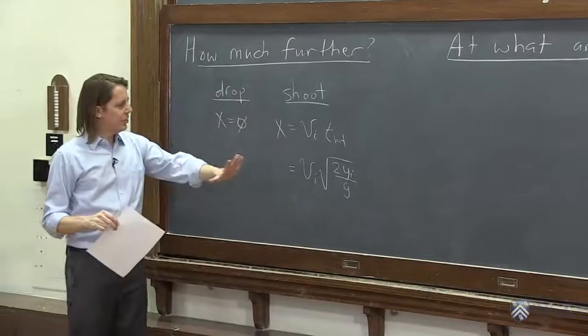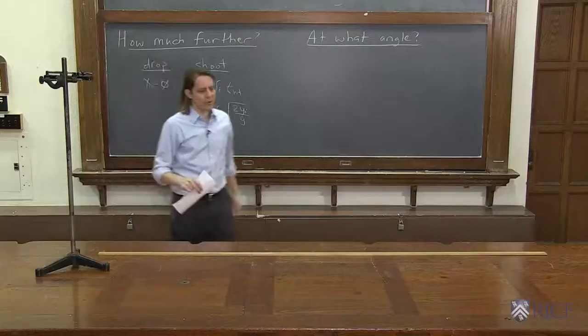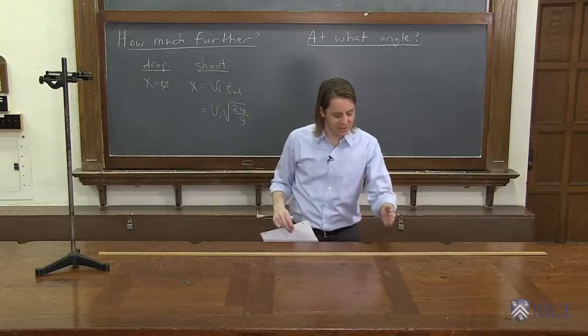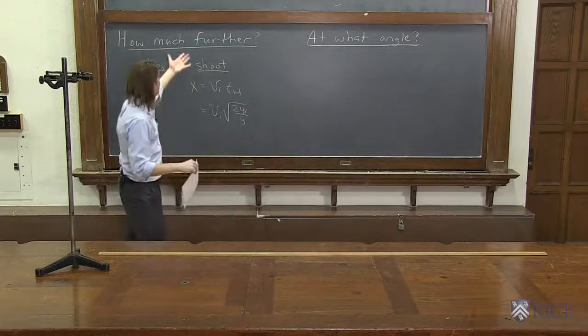But you can't solve for it because we don't know how fast it was going. So what are we going to do? Well, that's why the ruler is here. I know I saw it hit at 1.3 meters. So instead of calculating how much further it went, we just measured how much further it went.